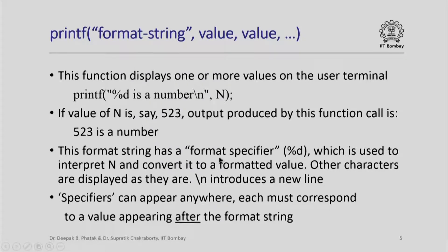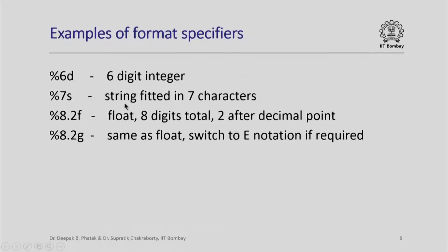In short, the format string has format specifiers; all other characters are displayed as they are. Specifiers can appear anywhere but each must correspond to a value appearing after the format string. Some examples of format specifiers: %6d means a 6-digit integer; %7s means a string fitted in 7 characters; %8.2f means a floating-point representation with a total of 8 digits and 2 digits after the decimal point; %8.2g means the same but uses e-notation if the number is very large or very small.